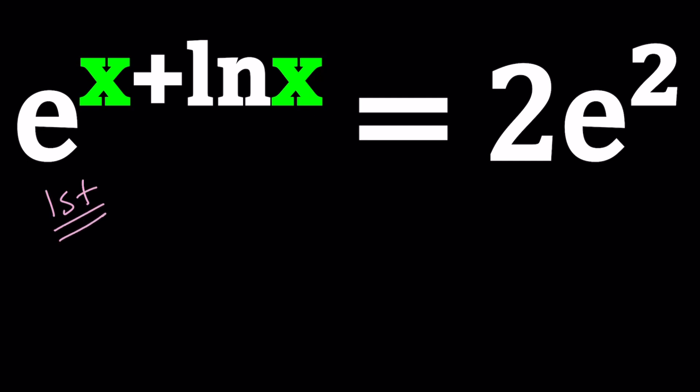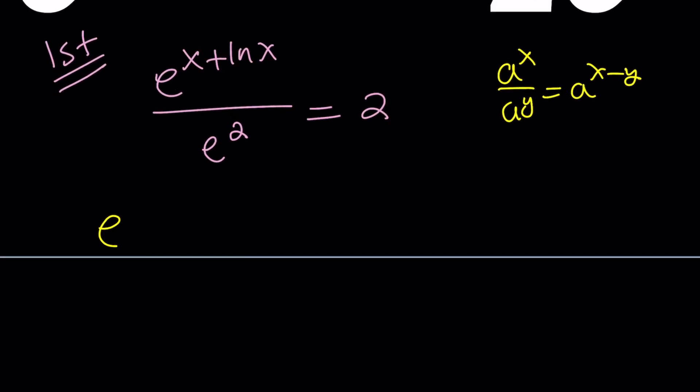So for my first method, I want to go ahead and divide both sides by e squared. That's going to give me a 2. Now since we're dividing powers of e, what's the rule? The rule says if you divide a to the x by a to the y, you get a to the power x minus y. So you're supposed to subtract the exponents, e to the power x plus ln x minus 2, notice that this is an exponent, equals 2.